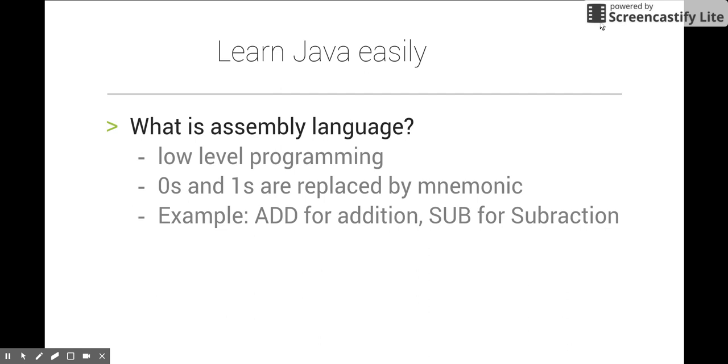As I said, machines understand only zeros and ones, so there needs to be something that converts ADD 2, 3 to equivalent zeros and ones. Here comes the assembler.